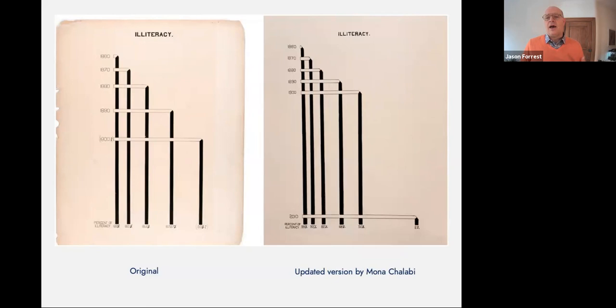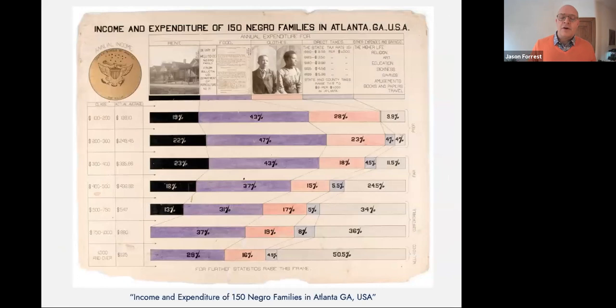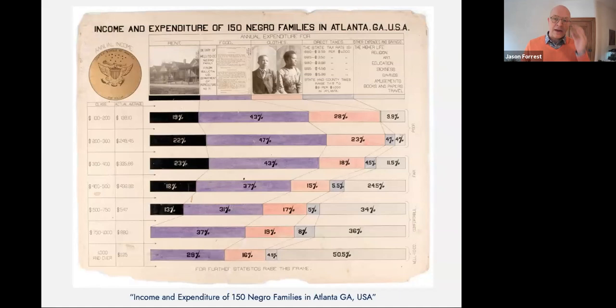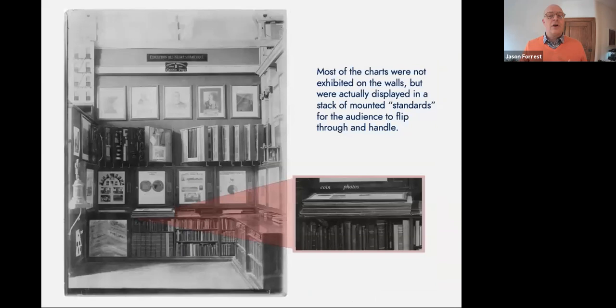'Income and Expenditure of 150 Negro Families in Atlanta, Georgia, USA' is probably the most unique chart in the series, singular in its horizontal format. It serves as a key to the entire series as it humanizes the data — the top row functions as an expanded legend with rent, food, clothes, taxes, and other expenses doubling as column headers mapped to colors in a horizontally stacked bar chart below. This chart comes at the end of the Georgia Negro series as number 31, but was actually displayed as the introduction to the charts in the exhibit.